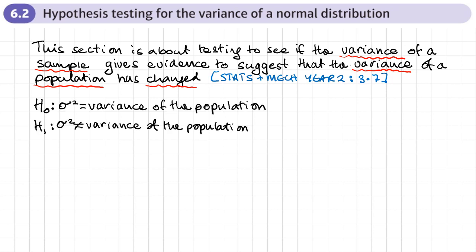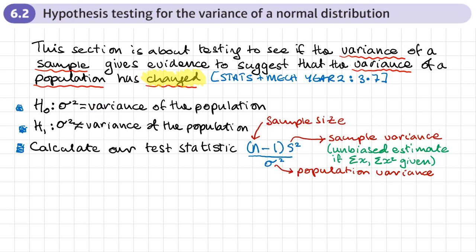First of all, let's start with H0 and H1. H0 is always going to be that sigma squared is equal to the variance of the population — this will be given as a number in the question. H1 is always that sigma squared is not equal to the variance of the population. These hypothesis tests are not about whether the variance has increased or decreased; it's all about whether the variance has changed. H1 will always be that sigma squared is not equal to the given value.